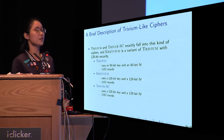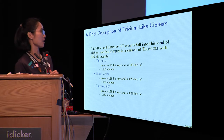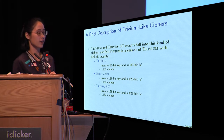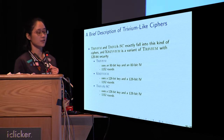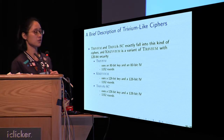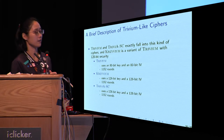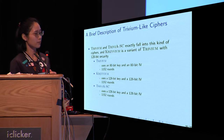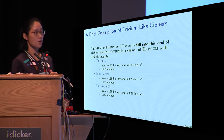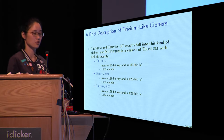Trivium and Trivium SC exactly fall into this class of cipher, and Kreyvium is a variant of Trivium. These three ciphers use different lengths of key and IV, but all of them iterate 1,152 rounds in the initialization.